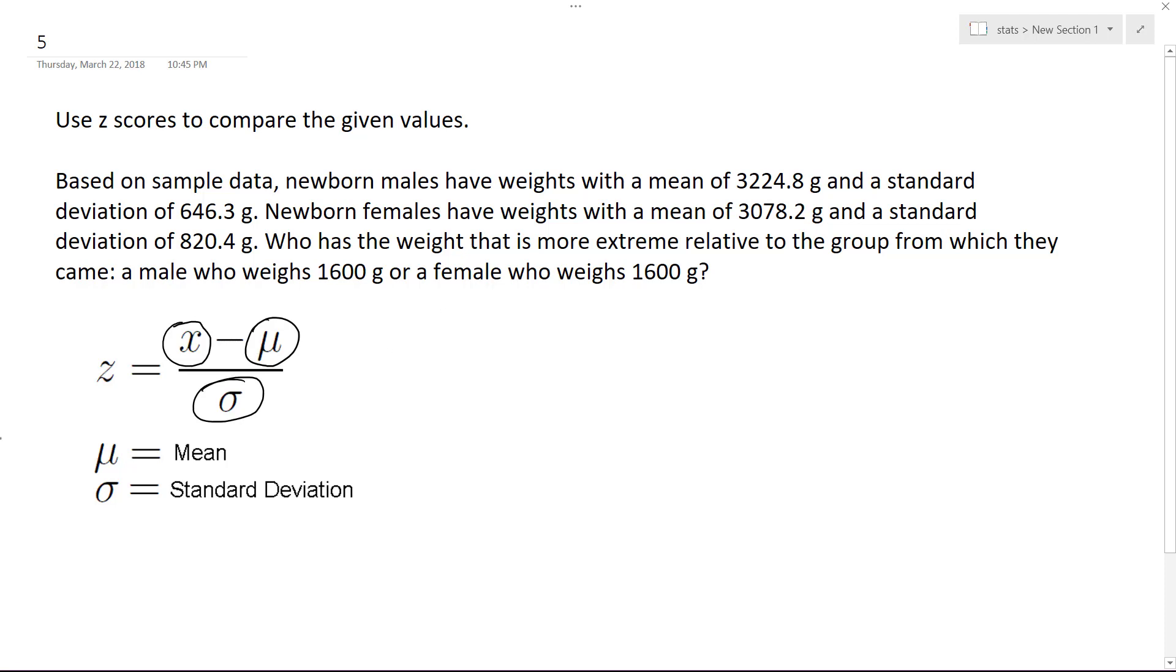So first for the boy, what we're going to have is 1600 minus 3224.8 divided by 646.3 grams, and this gives us approximately negative 2.51.